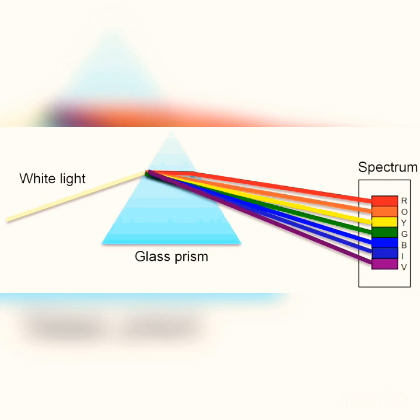When a narrow beam of white light is allowed to pass through a prism, the light coming out from the other side of the prism is found to have seven colors. The various colors seen are violet, indigo, blue, green, yellow, orange, and red.